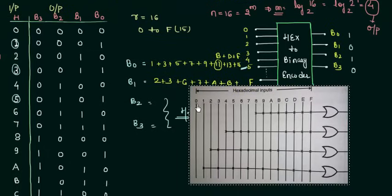These are the hexadecimal inputs from 0 to F and these are the four Boolean outputs B0, B1, B2 and B3. So check your answer, check your circuit and this is all for the hexadecimal to binary encoder. Thank you.